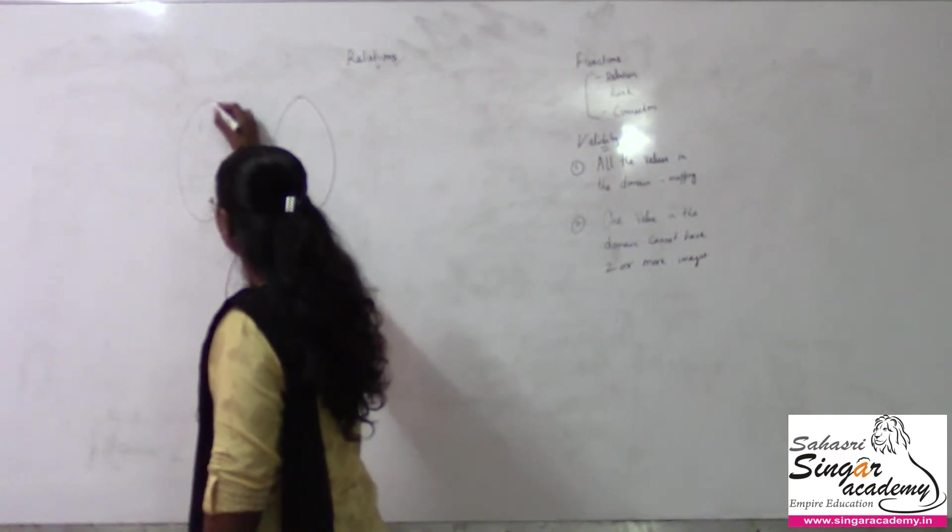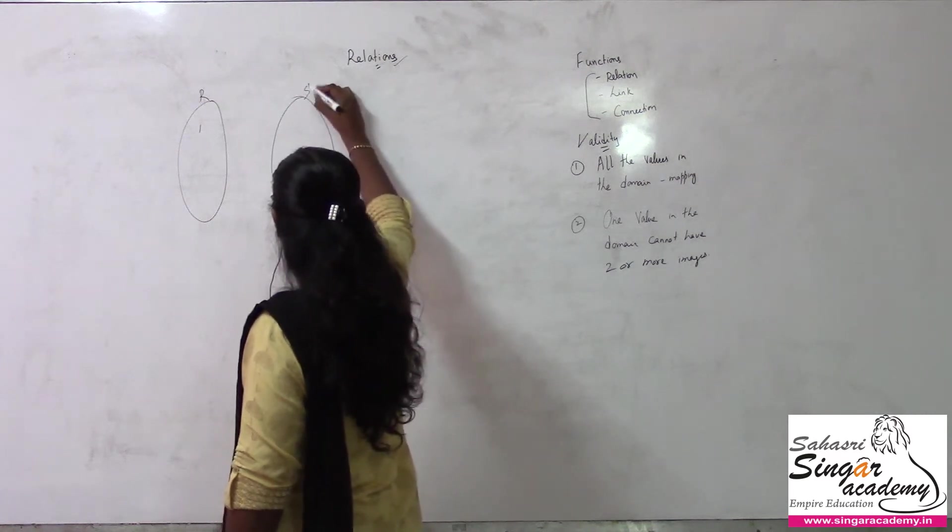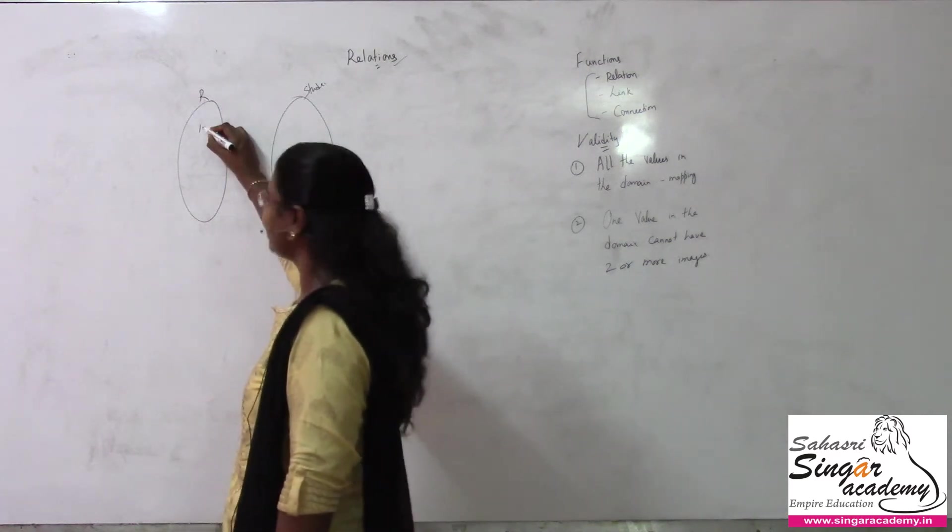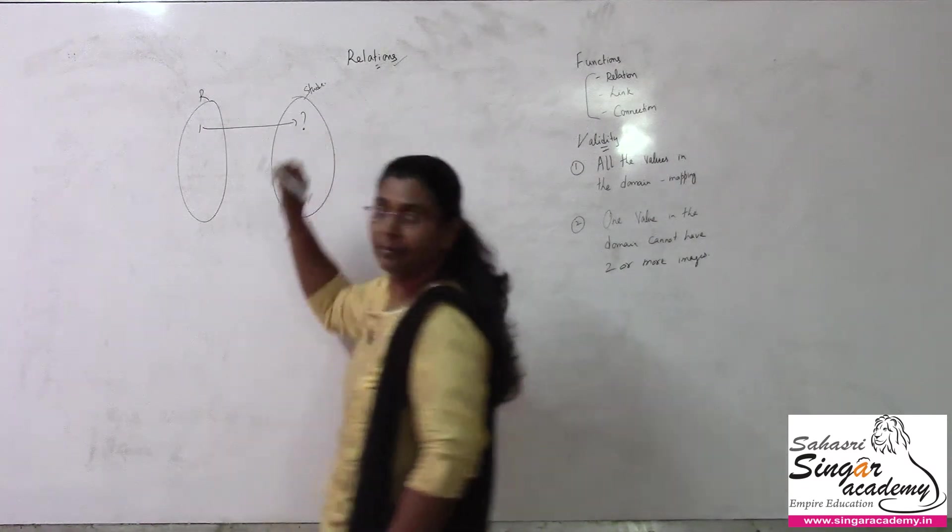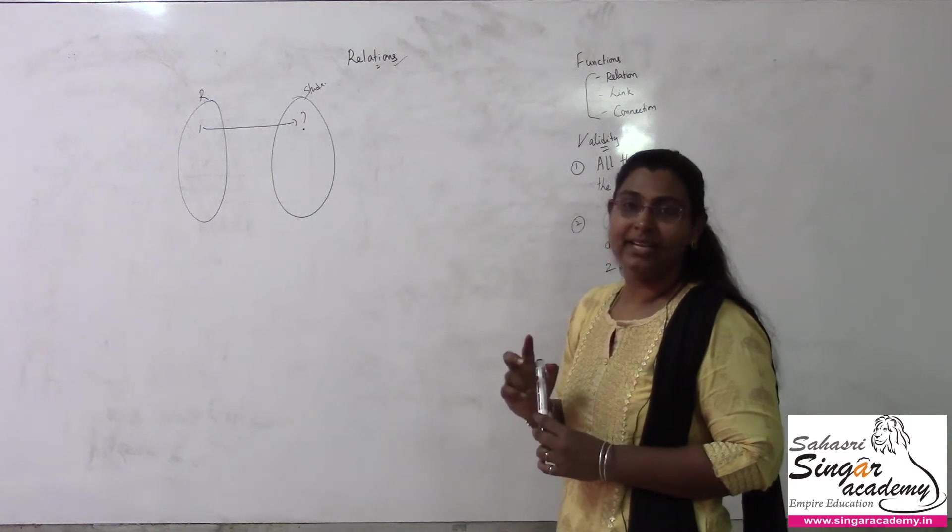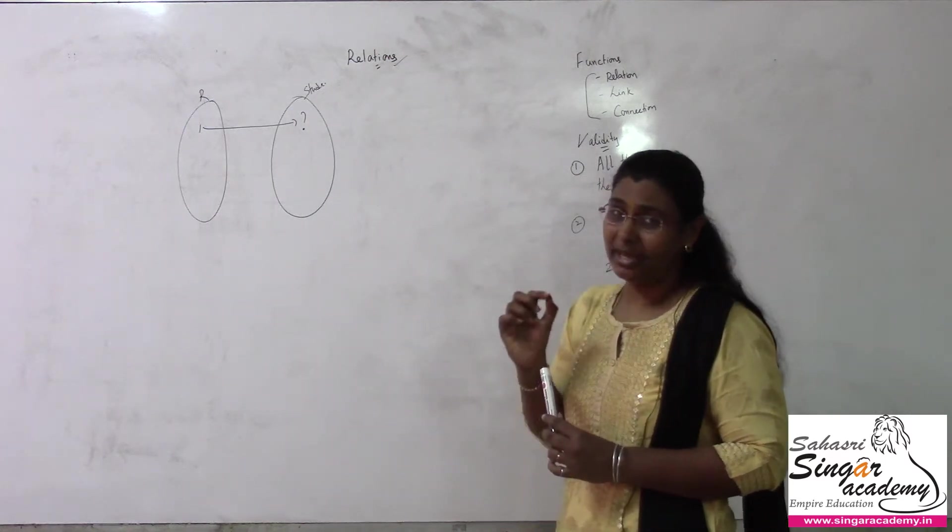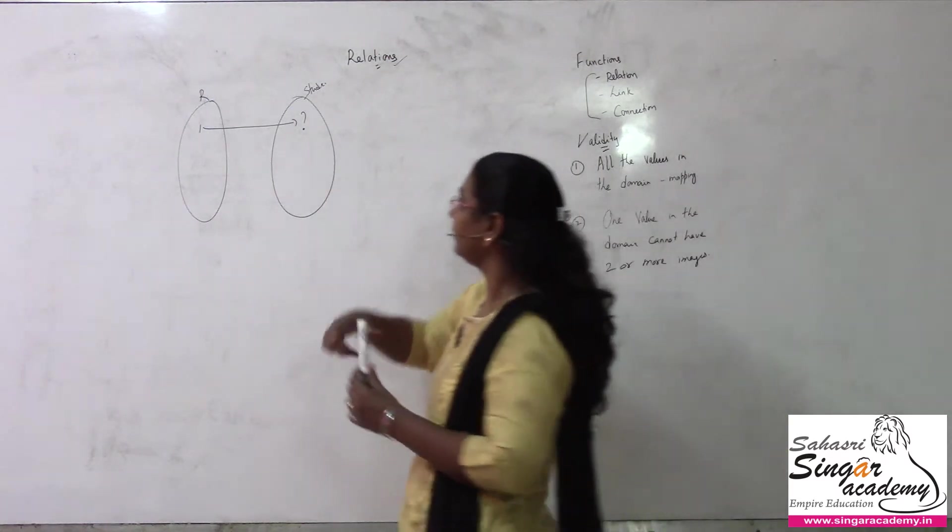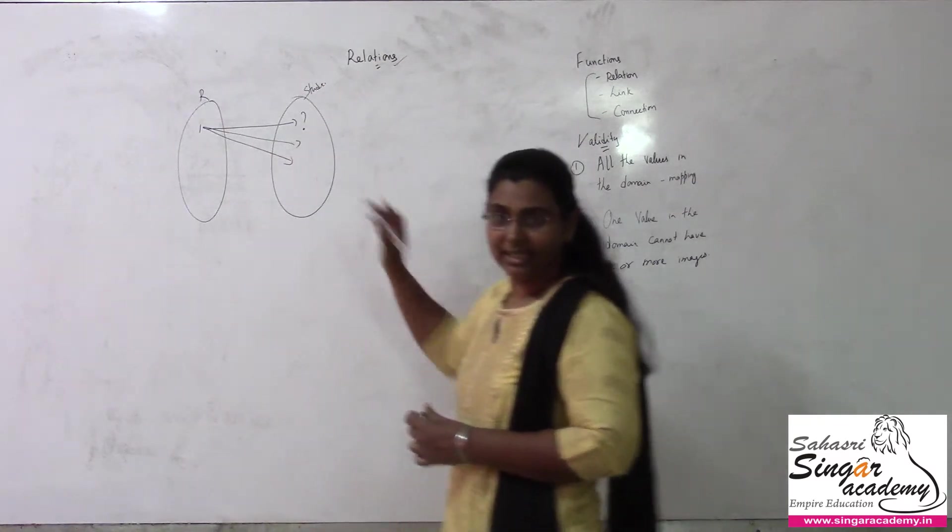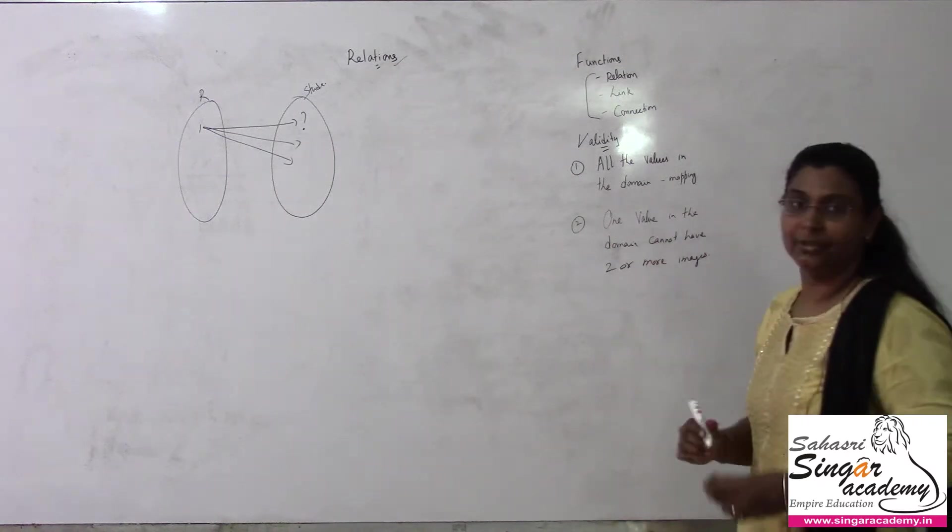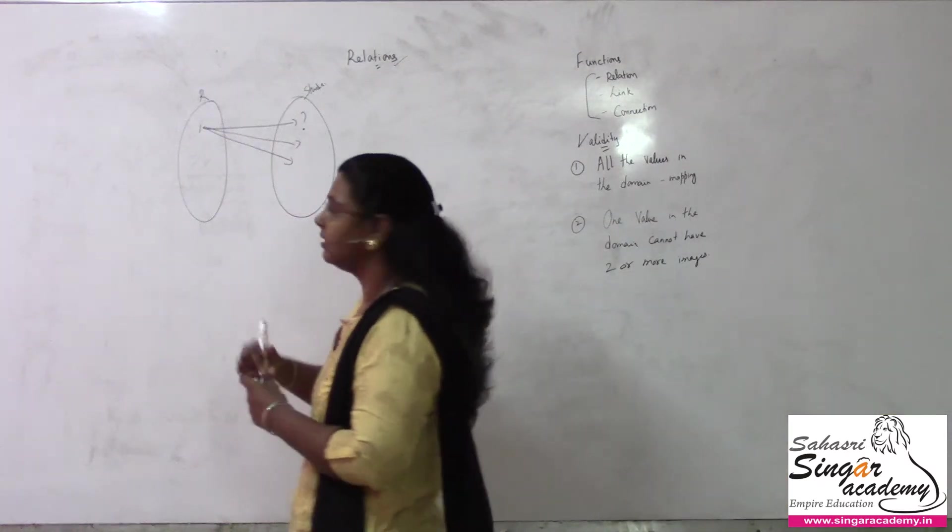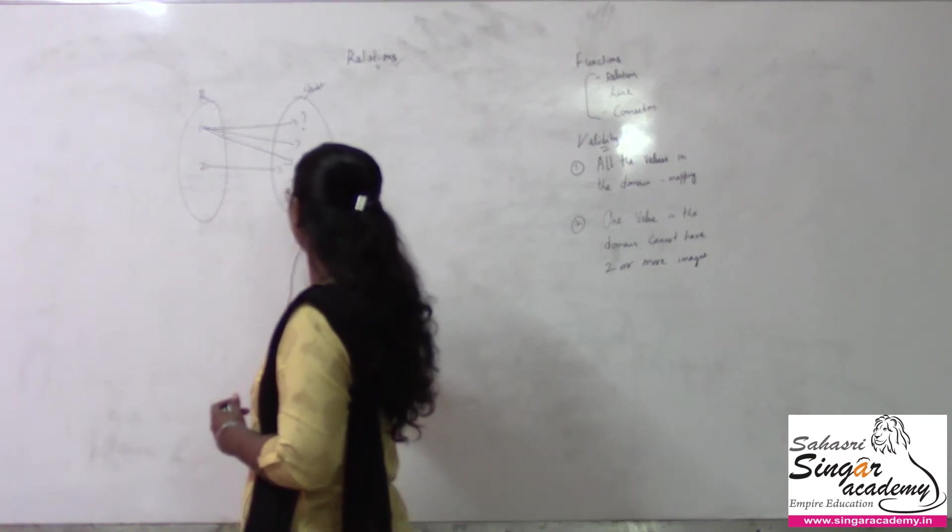Rank 1 - this is for ranks and this is for students. Is it necessary for rank 1 to be given to only one student? Not necessary. If multiple students have the same mark score, first rank can be given to more than one student, right?